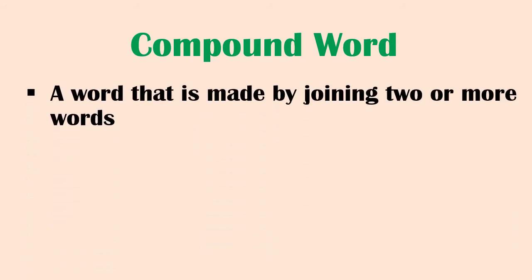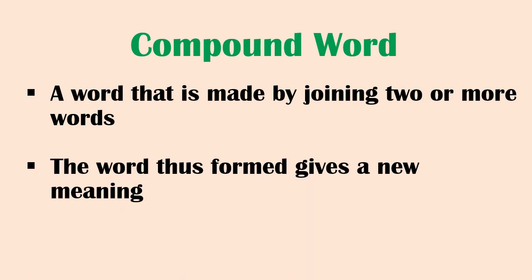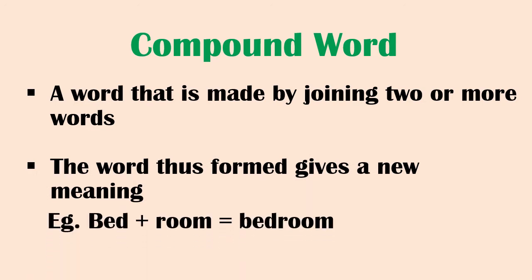Before learning the rules for pluralization, let's understand what a compound word is. A word that is made by joining two or more words is called a compound word. The word thus formed gives a new meaning. For example, 'bed' and 'room' are separate words, but when fused together, a new word 'bedroom' is formed with an entirely new meaning.